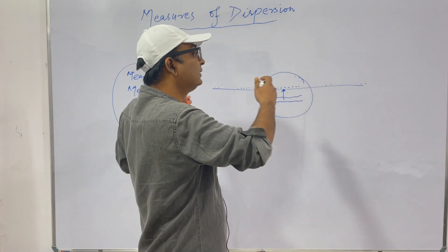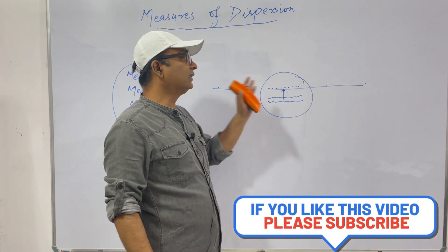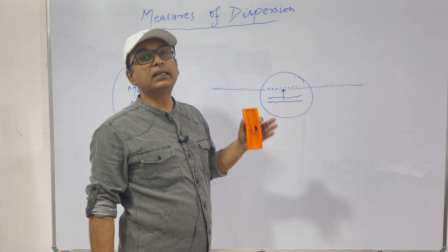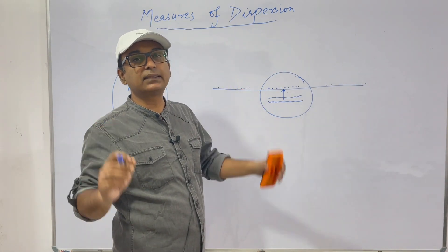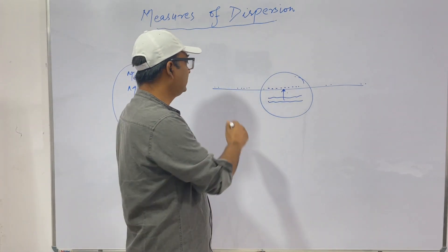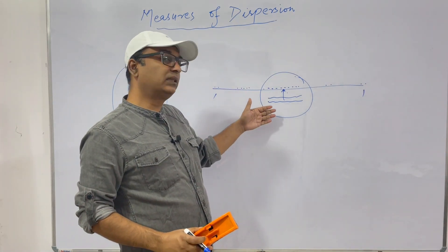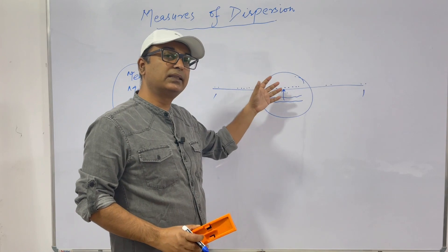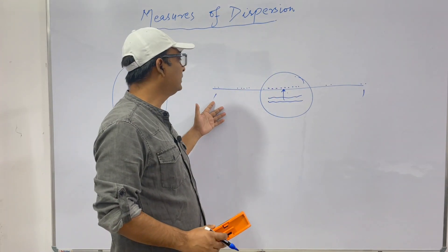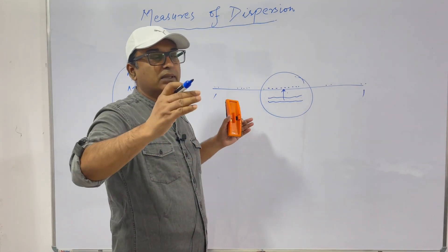But data also exists at the extremes — it is scattered from the first to the last available value. That scatteredness is basically dispersion. The data has variability; it varies across the range. When we study measures of central tendency we study where the data is centered, and when we study dispersion we study the variability — how much the data is dispersed from its central values.